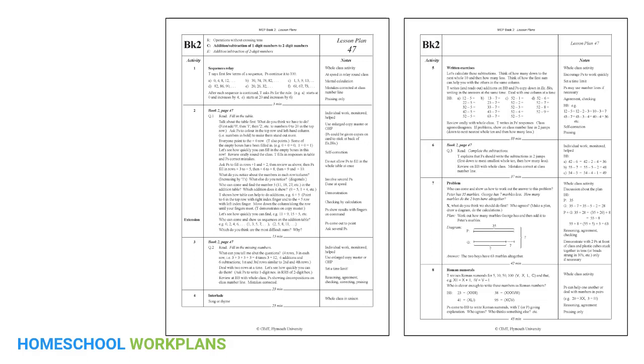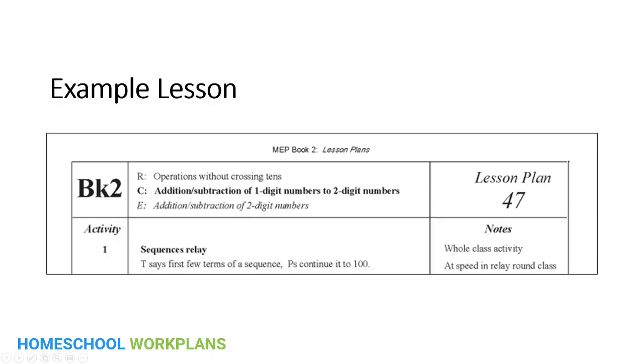Okay so having said that let's start by taking a look at the very top section of the first page. So every lesson has this top section which is a summary of the different types of activities in this lesson. The letter R there at the top stands for review. So you can see here that the review for this lesson is going to be operations without crossing tens, which is a fancy way of saying addition problems that don't involve carrying or regrouping. The letter C here stands for the core lesson and in this case that core lesson is going to cover addition and subtraction of one-digit numbers to two-digit numbers.